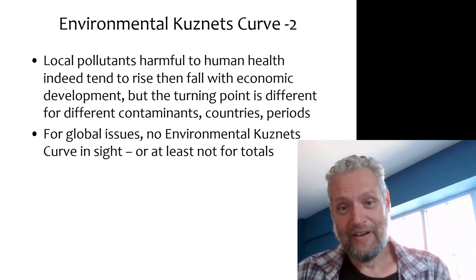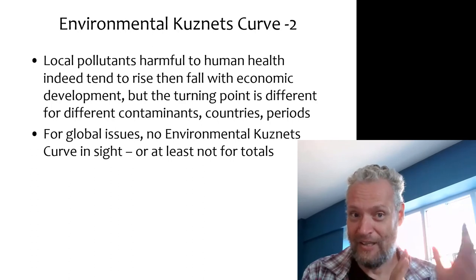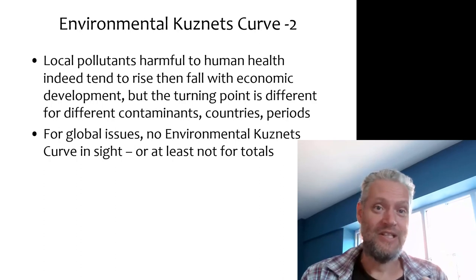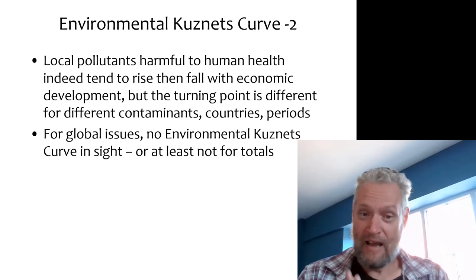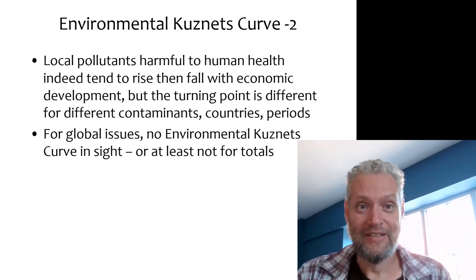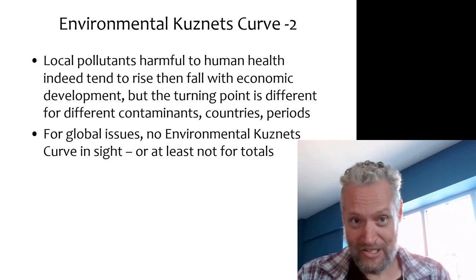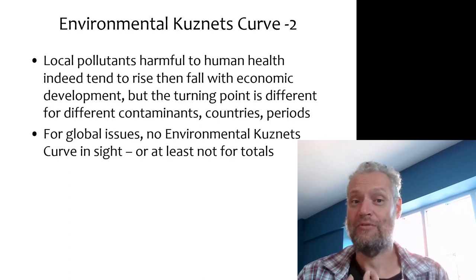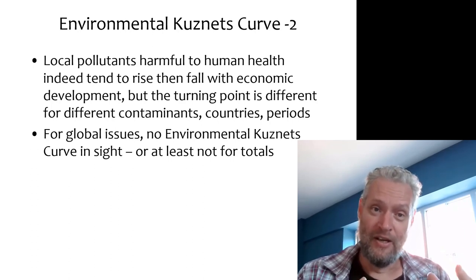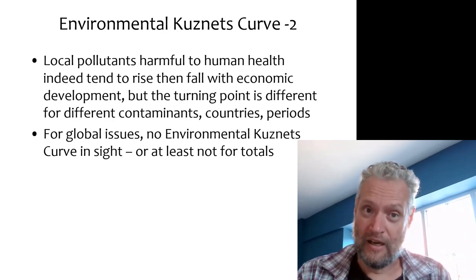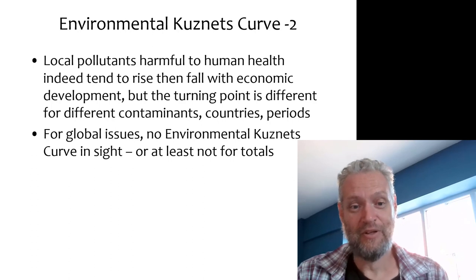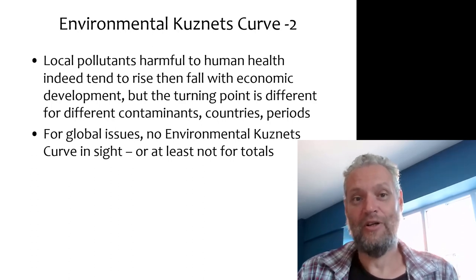That is true for local pollutants directly harmful to human health, where you can often discern an environmental Kuznets curve. But for global issues such as climate change and biodiversity loss, there is absolutely no environmental Kuznets curve in sight — it just doesn't appear in the data. That is true if you are looking at total CO2 emissions. If you look at CO2 emissions per capita or CO2 emissions per dollar of GDP — the emission intensity — then sometimes the environmental Kuznets curve comes up, but not if you are looking at total emissions.